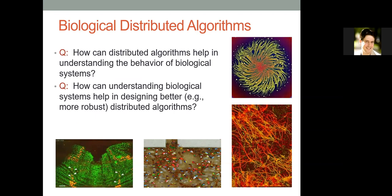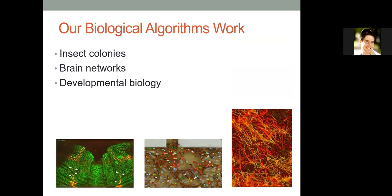The question for the area is: how can distributed algorithms help in understanding the behavior of biological systems? And on the other hand, how can understanding how biological systems work help us to design better distributed algorithms — more robust, flexible, et cetera? Our work in this area has covered basically three topics: insect colonies, brain networks, and a little dabbling into developmental biology.